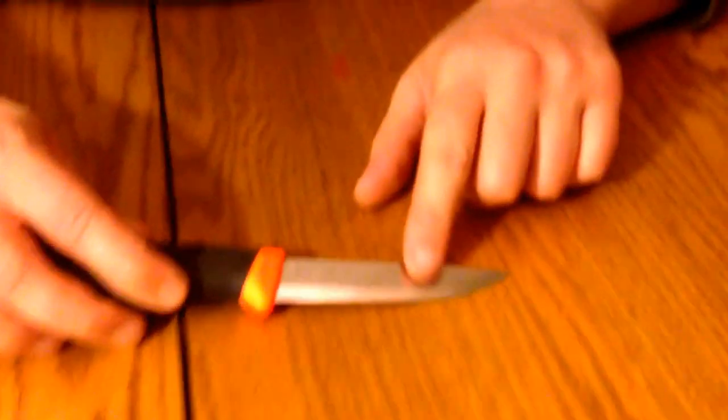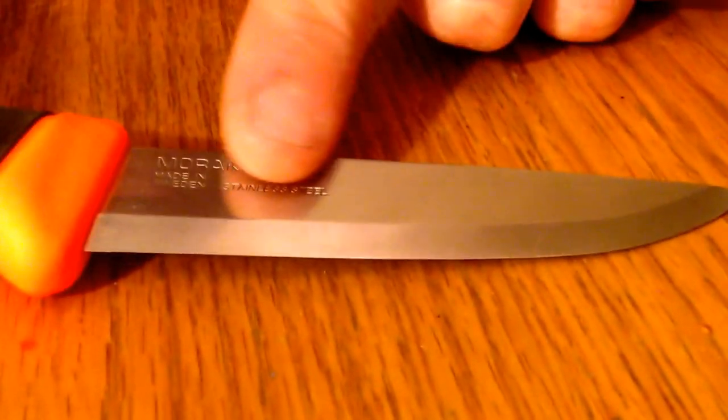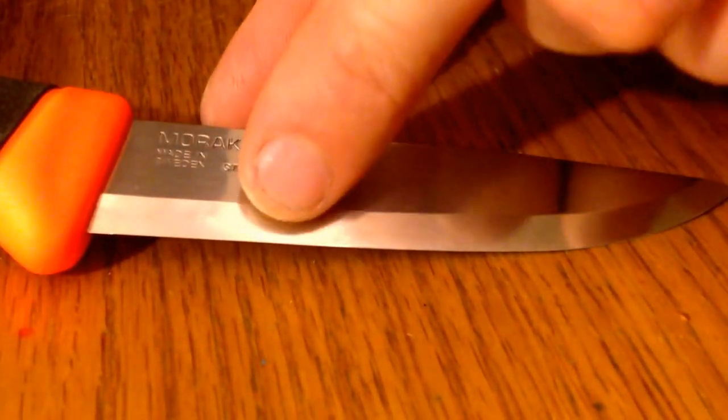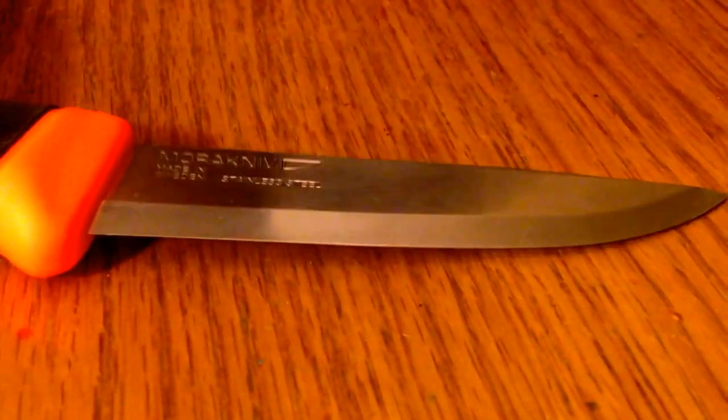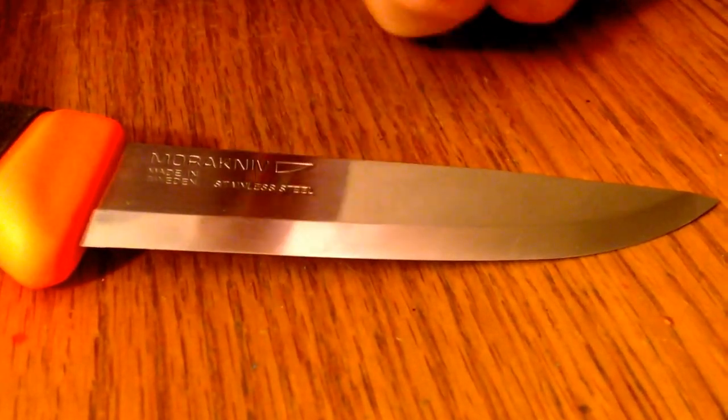The blade thickness is roughly .10 inches or 2.5 millimeters thick. The blade has what they call a Scandi grind. It's like flat from here on up and from here on down it's kind of flat ground. It's called a Scandi grind.